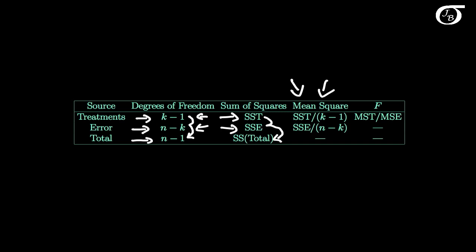One thing to note before we move on to our F statistic is that mean square error is the pooled variance, sp squared. One-way ANOVA assumes that the populations all have the same variance. So the mean square error is pooling all those individual sample variances together from the different groups, and coming up with one overall estimate of the within-group variability.